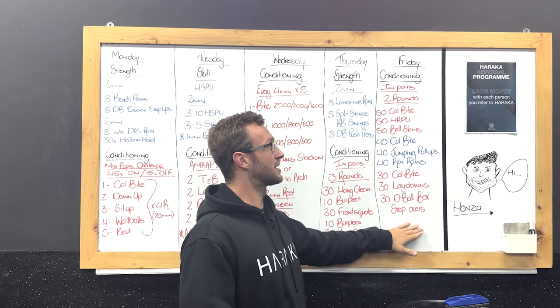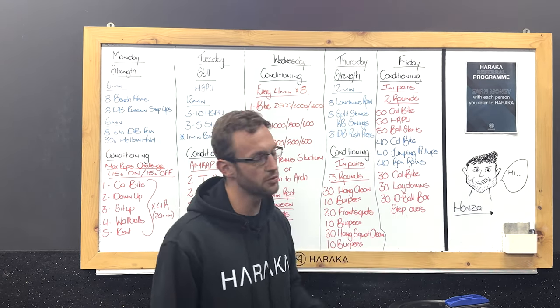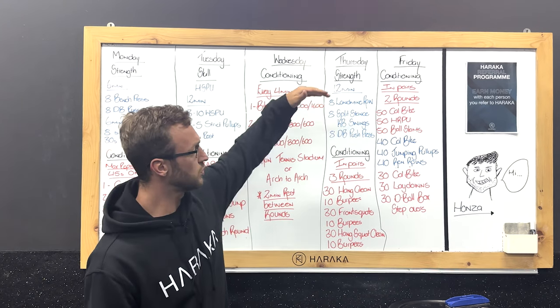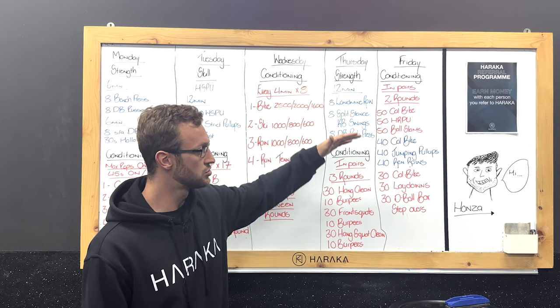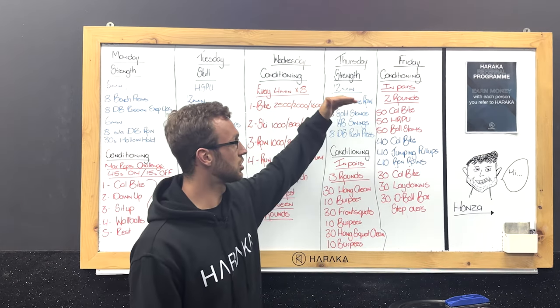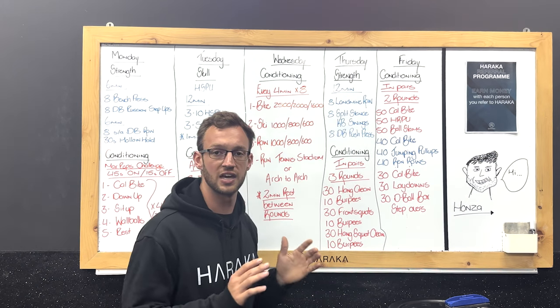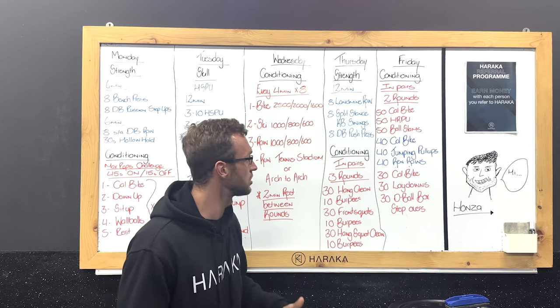Then for Friday again, it's your lucky week guys. We have two partner workouts. Friday we're going to work in pairs again. That one is just going to be one long chipper. So you're just going to try and get from the top to the bottom as fast as you can. And then we're going to do that for two rounds. So starting with 50s. 50 cal on the bike, 50 hand release push-ups, 50 ball slams. Obviously you may share the reps any way you want to.